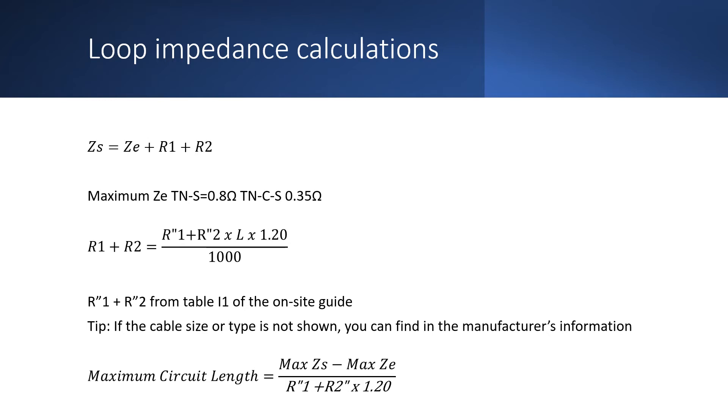So at the bottom of the screen here, we've got a calculation for maximum circuit length, which is a transposition of the equation I've shown above. But here, because we're looking for the length, what we do is we take the maximum ZS, we subtract the maximum ZE, and then divide by the tabulated values for R1 and R2, which we find in the on-site guide, and then multiply that by 1.2.